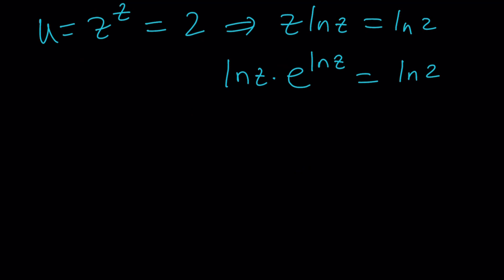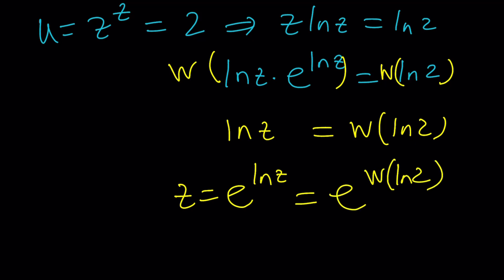And then if you apply Lambert's w function on both sides, like this, w this, w that, you're going to get ln z equals w of ln 2. And now to find z, we're going to do e to the ln z. So z is going to be e to the power w of ln 2.